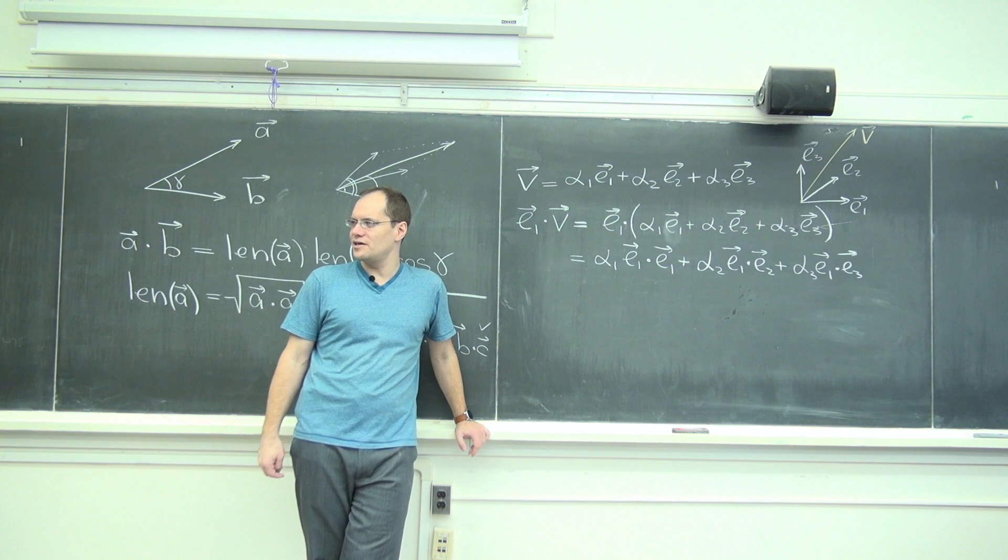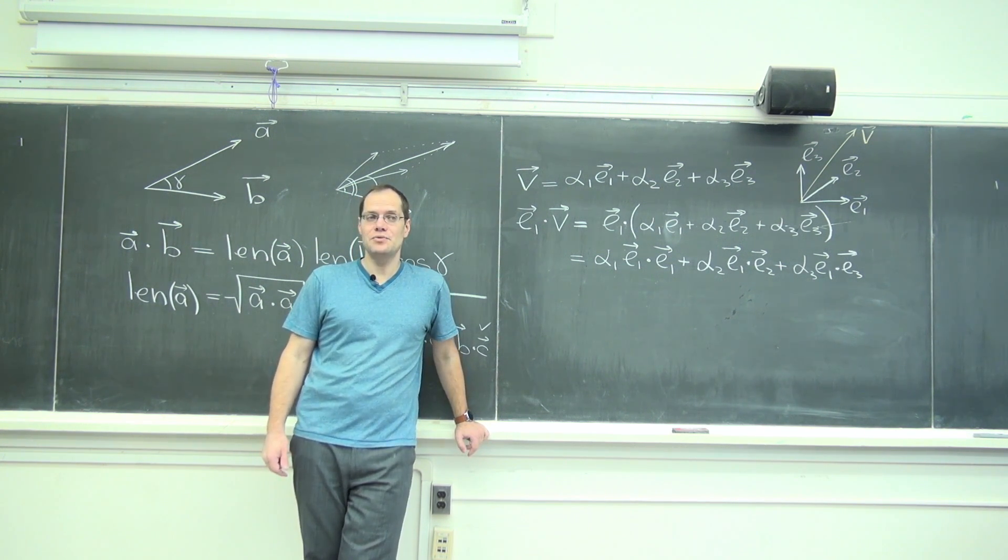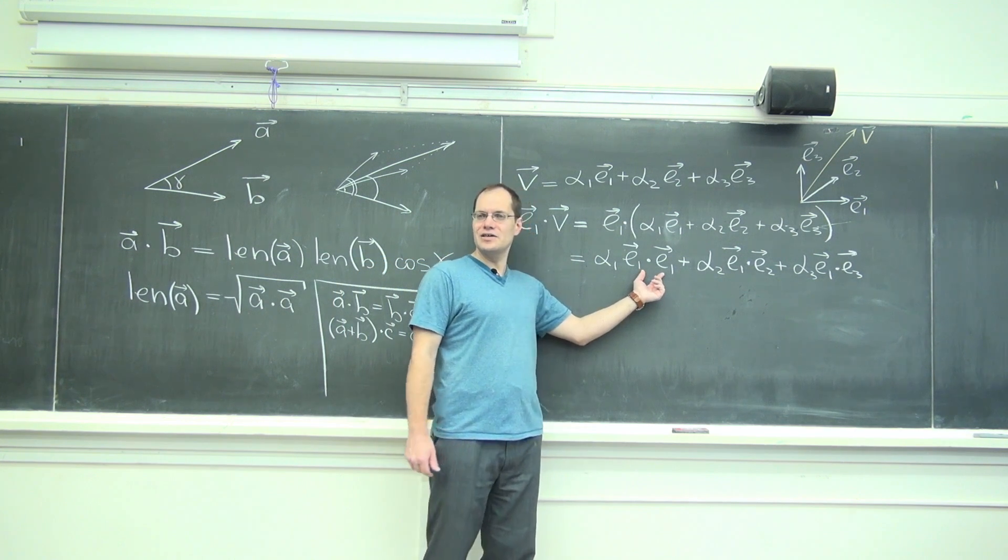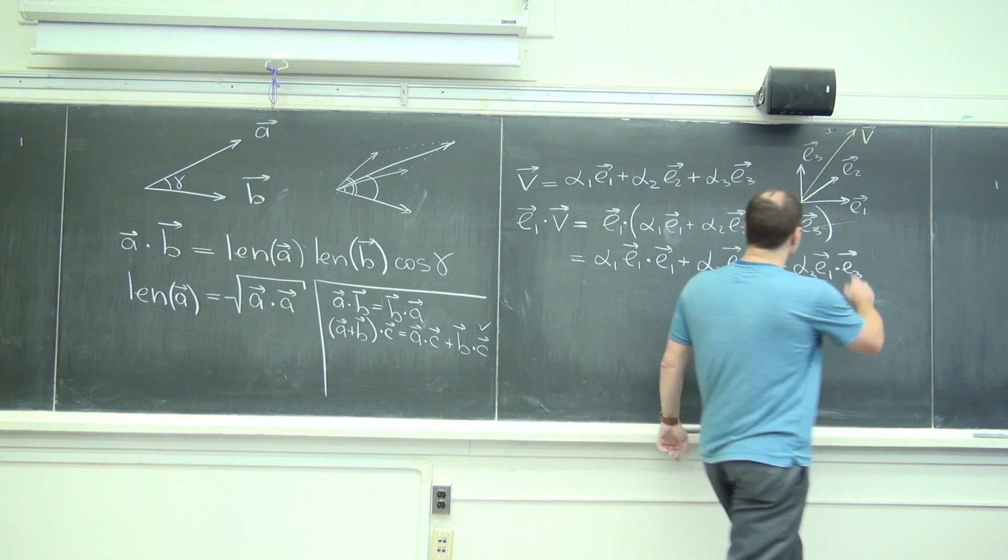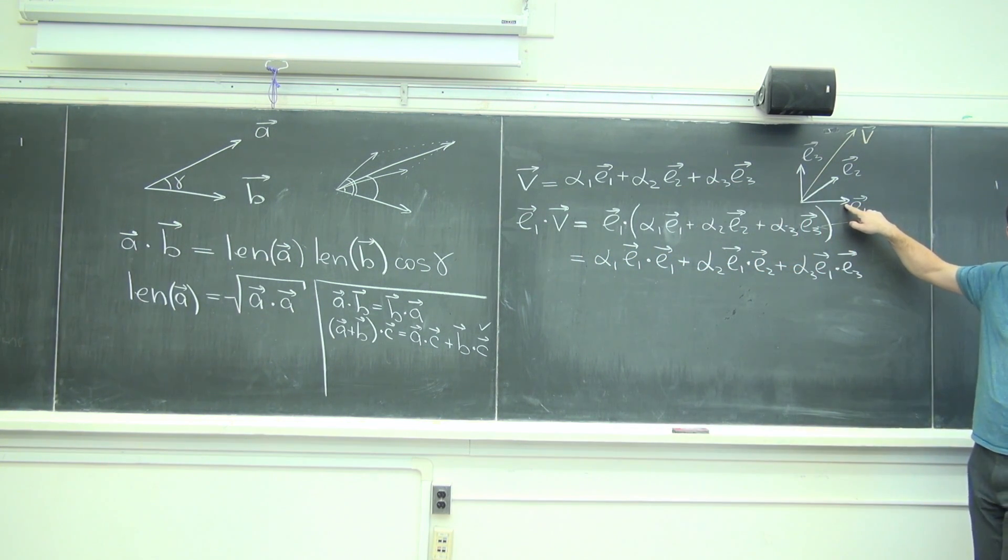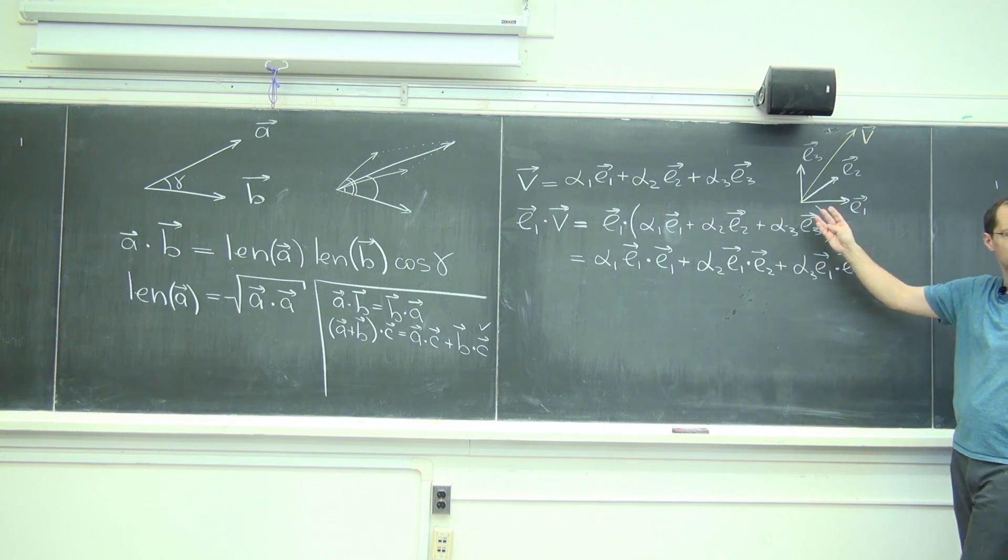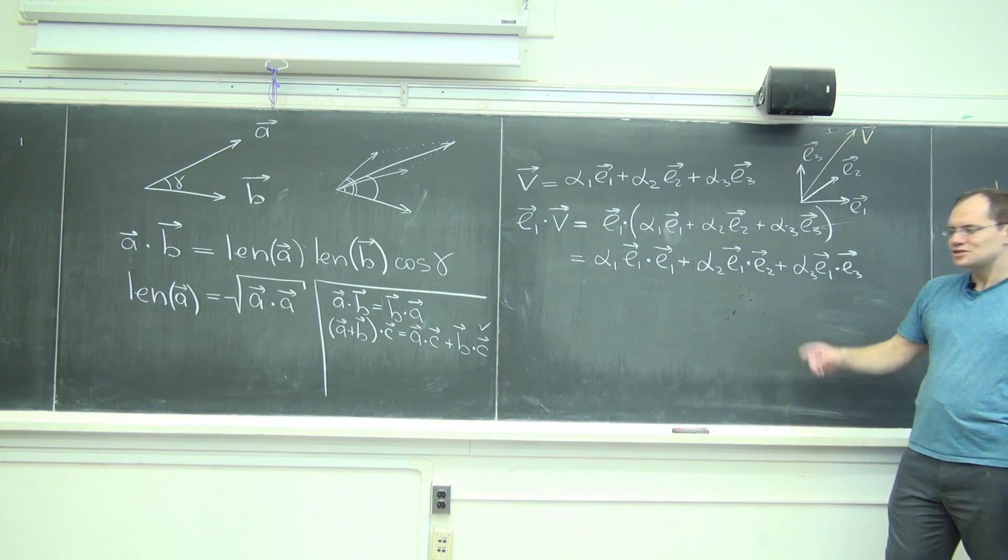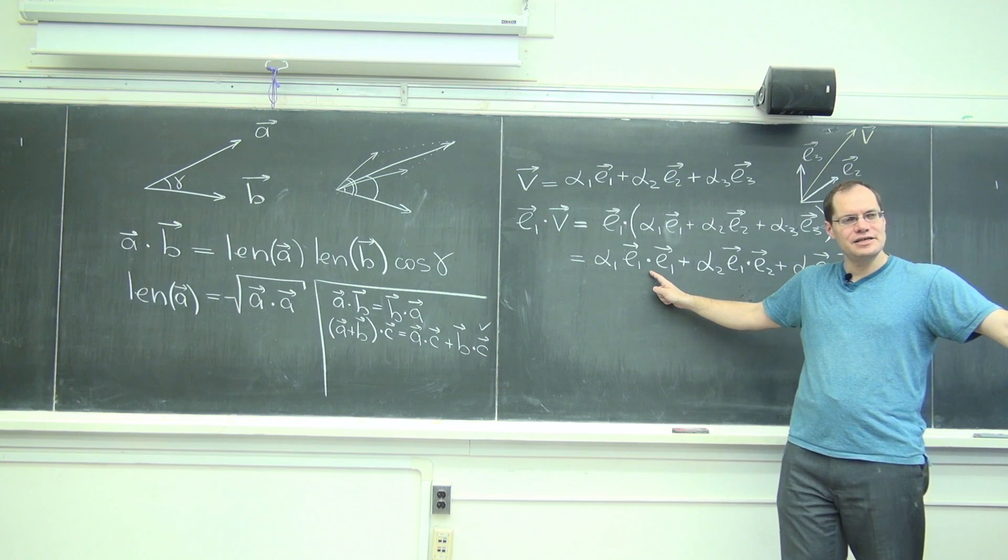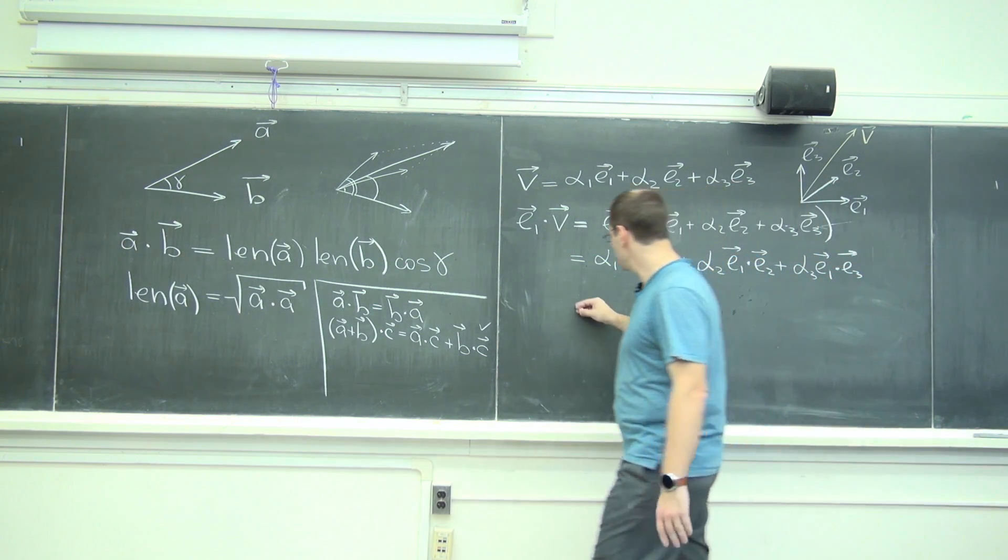But we have specific vectors E1, E2, and E3. So we can talk about what E1 dot E1 is. Length of E1 squared. Very good. Because it's length of E1 times length of E1 times the cosine of the angle between E1 and E1, which is zero, so its cosine is one. But more specifically, what is length of E1? One. Remember we said this basis is orthonormal, Cartesian. Not only are they orthogonal, they're also unit length. So E1 dot E1 equals alpha 1, equals one.